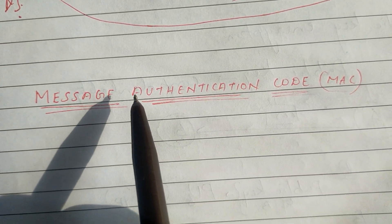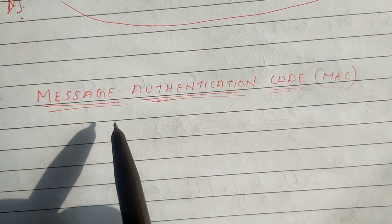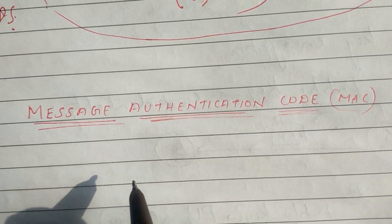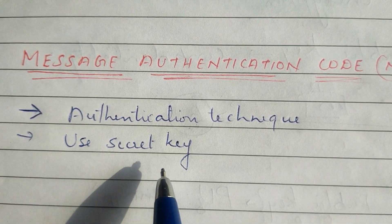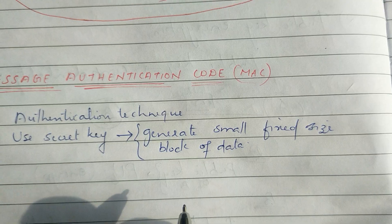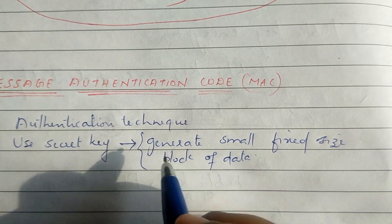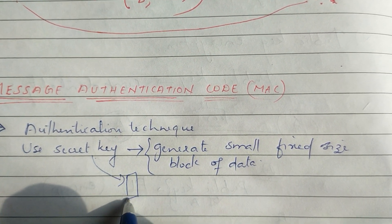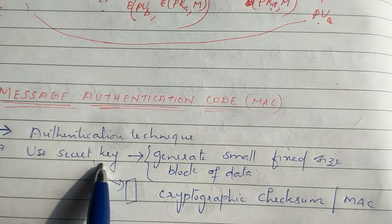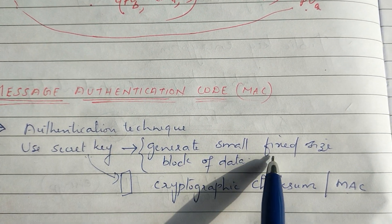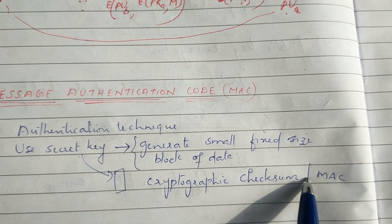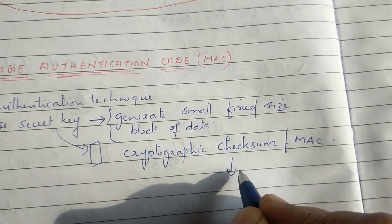Now, we have an authentication technique here. This uses a secret key. We use the secret key and a fixed-sized block of data. We apply a cryptographic checksum, and then there is the Message Authentication Code. We use MAC in this message.